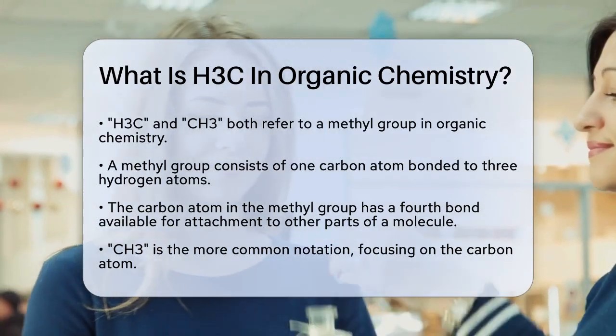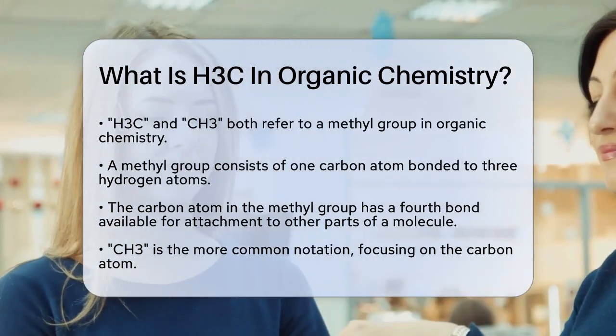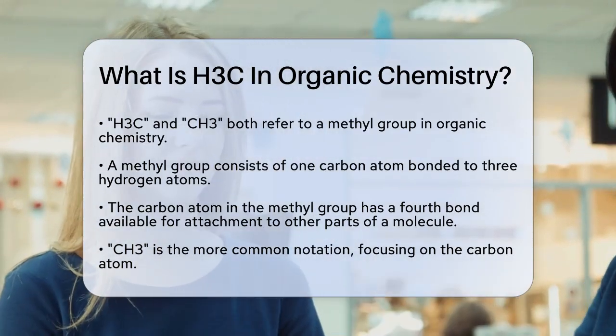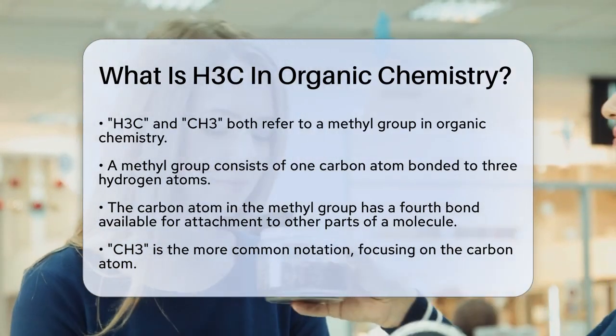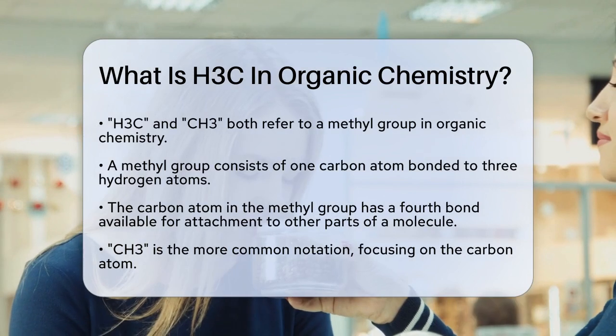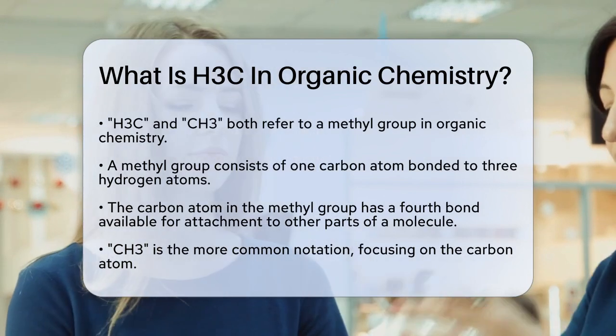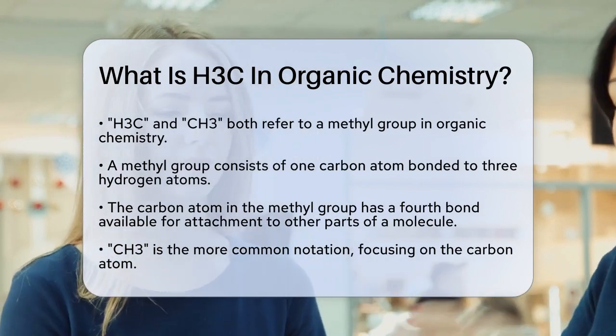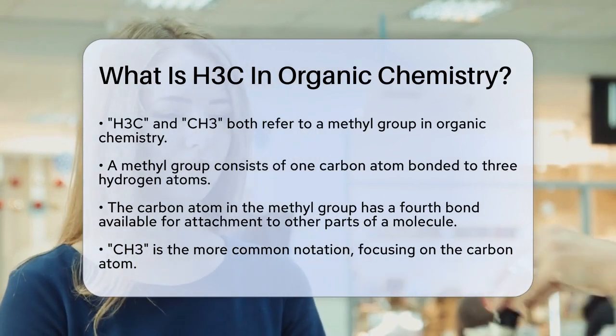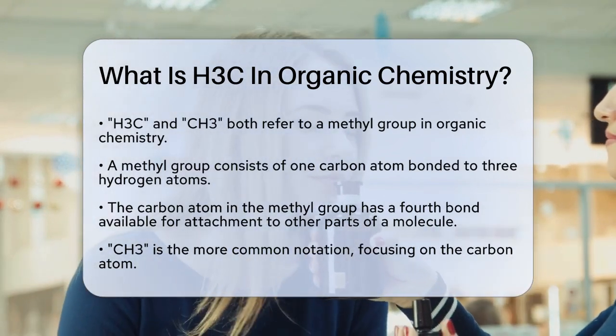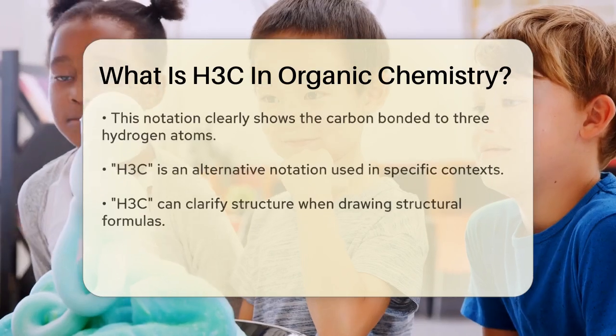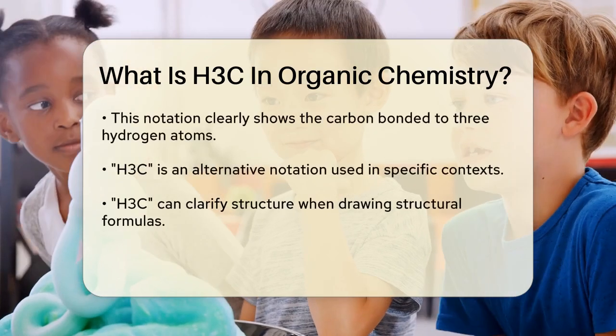A methyl group is a part of a molecule that consists of one carbon atom bonded to three hydrogen atoms. The carbon atom in this group also has a fourth bond that can attach to other parts of the molecule.